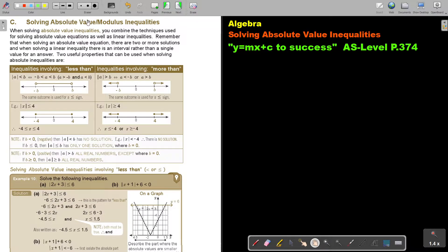Solving absolute value or modulus inequalities. When solving absolute value inequalities, you combine the techniques used for solving absolute value equations as well as linear inequalities. Remember that when solving an absolute value equation there are two or more solutions and when solving a linear inequality there is an interval rather than a single value for an answer. Two useful properties that can be used when solving absolute value inequalities are.